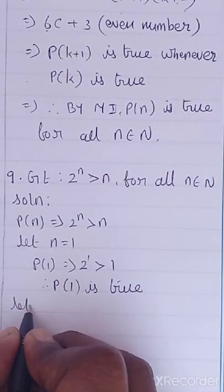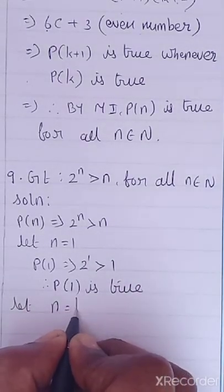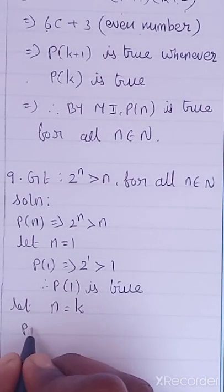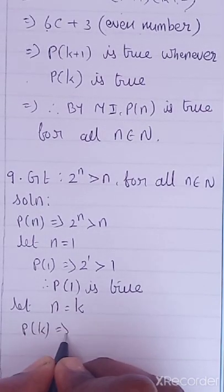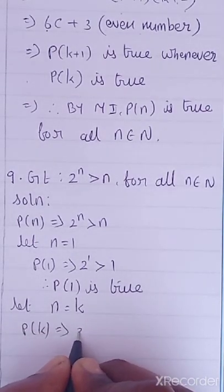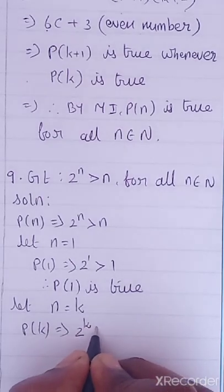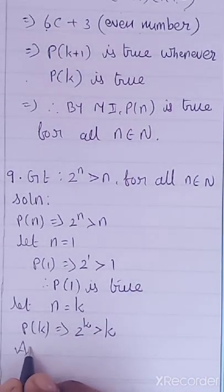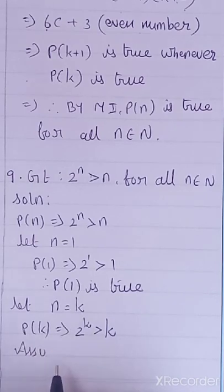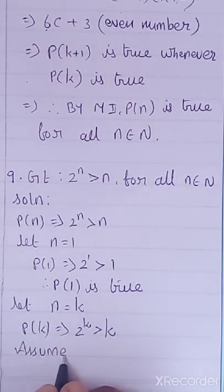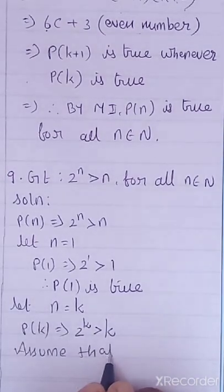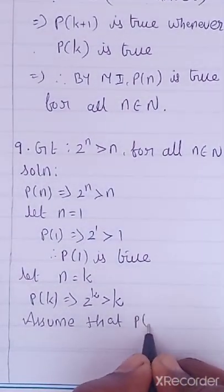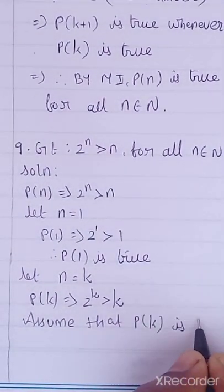What is your next step? Let N equal to K. So P of K implies 2 power K greater than K. We are going to assume that — assume that P of K is true.